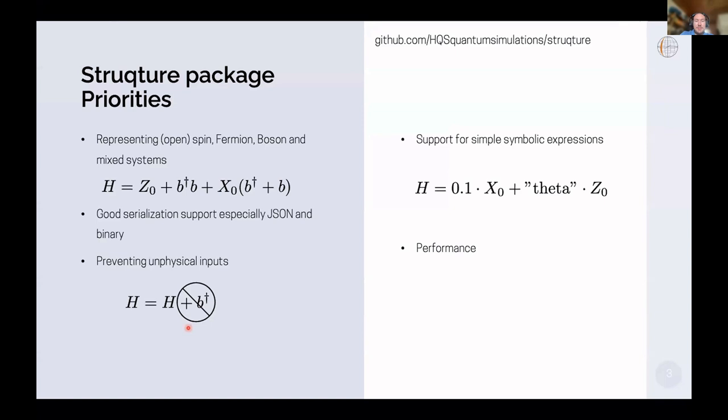Next priority is we want to use Rust's type system to prevent building unphysical Hamiltonians. Even for experienced users, if you gradually build up a Hamiltonian, it's quite easy to accidentally create an unphysical Hamiltonian that crashes simulation or gives nonsense results, and we prevent this with the type system.